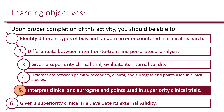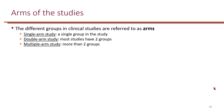Now let's interpret clinical and surrogate endpoints used in superiority clinical trials. Clinical trials can have various numbers of groups or arms. A single arm study will include a single group of patients, whereas a double arm study will evaluate two groups of patients, which is most common. Some studies can also have multiple arms.